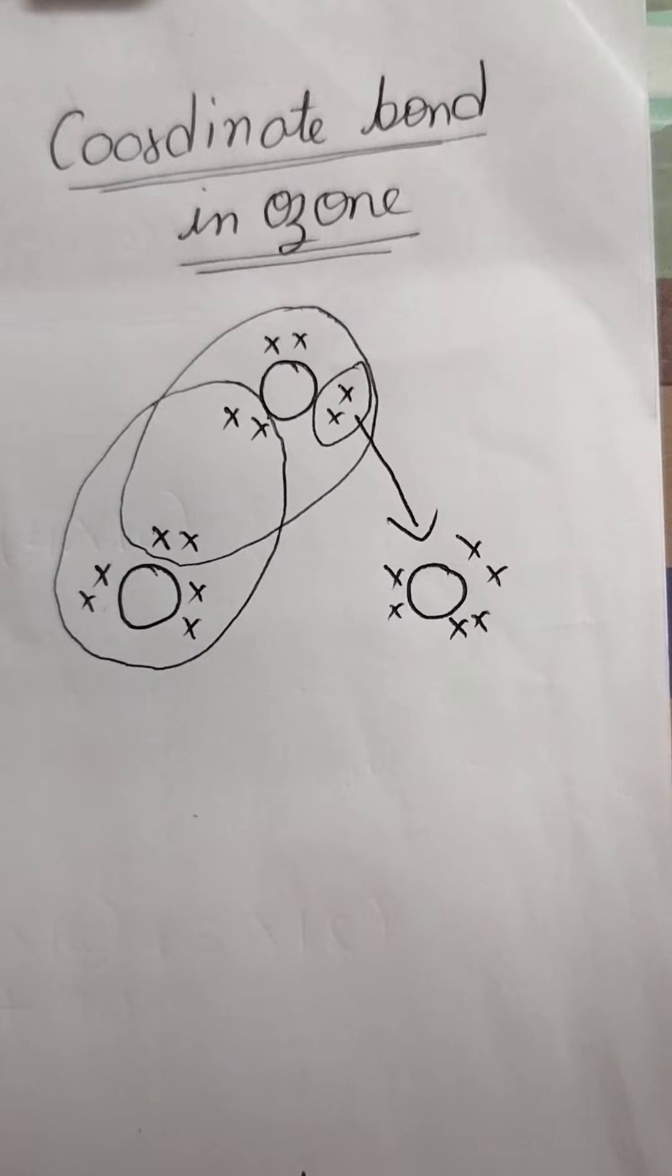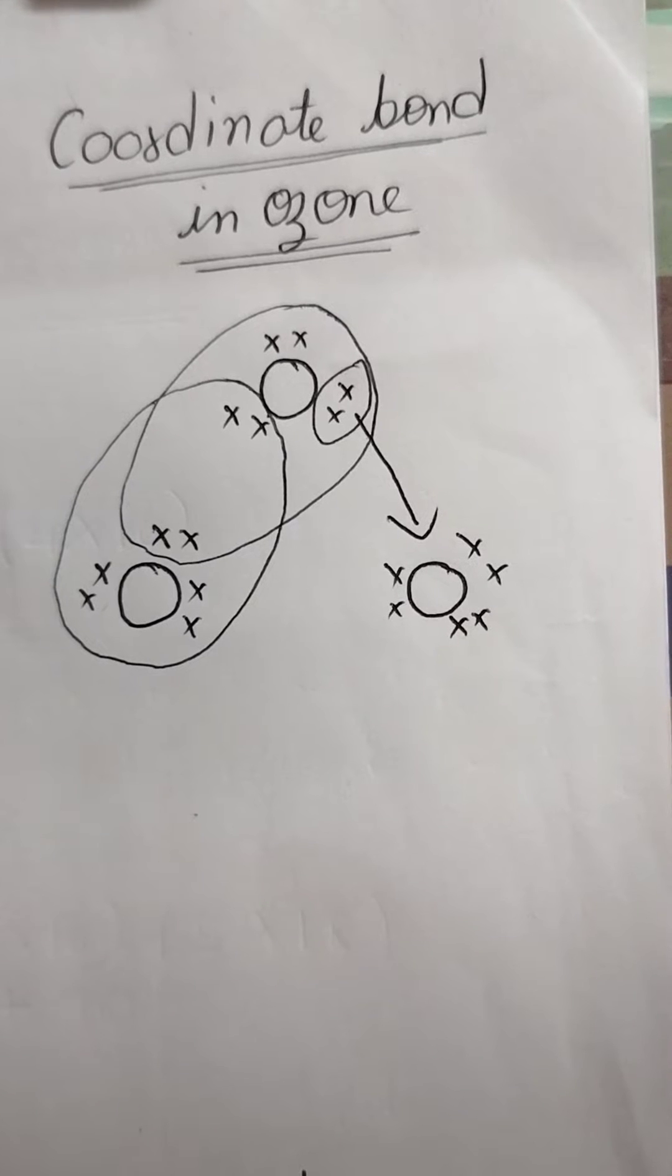A very good morning students. So today we will study coordinate bond formation in ozone. What do you mean by coordinate bond? Coordinate bond is a type of covalent bond only.